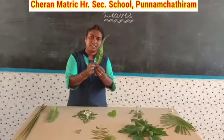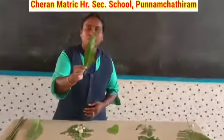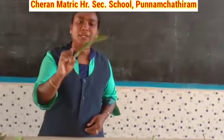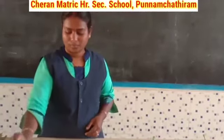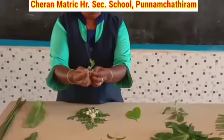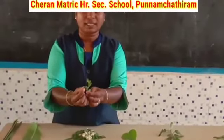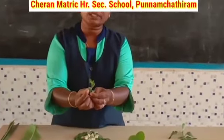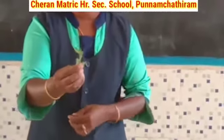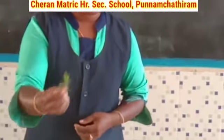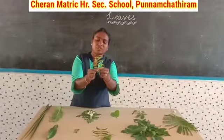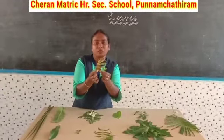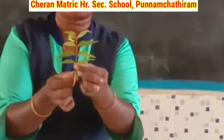This is mango leaf. This is what leaf? Mango leaf. Children, what is this leaf? Yes, this is tulsi leaves. See the next leaf. This is neem leaves. Neem leaves.